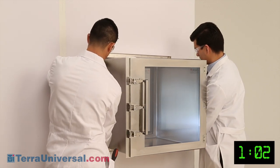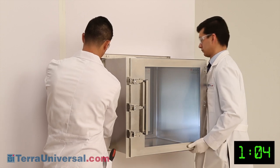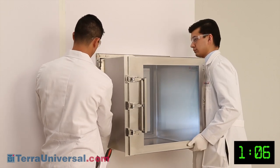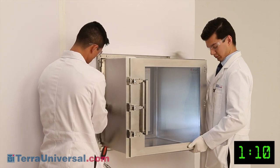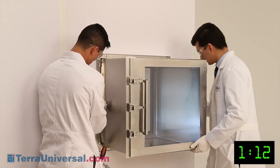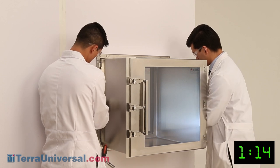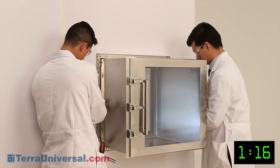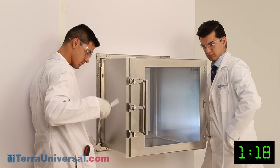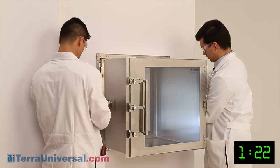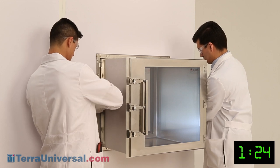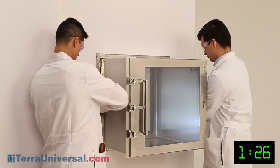Next, position the dirty side mounting bracket over the lag bolt on each side of the chamber and thread a nut on the end of each bolt. Verify the chamber is level and then tighten each nut until the chamber is secure against the wall. Be careful not to over-tighten. The dirty side bracket should be secure against the wall but should not bend inward.